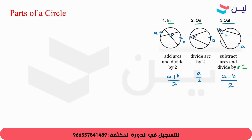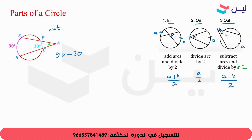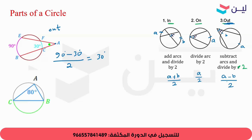Let me go through problems so you can see it. For this problem, two secants intersect — is this in, on, or out? This is out. So when it's out, it's going to be 90 minus 30 over 2, which is 30 degrees. When it's out, you subtract arcs and divide by two. For the second one — in, on, or out? This is on. When it's on, we divide by two to find the angle, but the angle is already given.